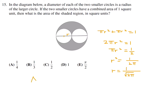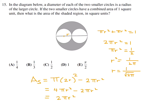The area of the shaded region equals the area of the big circle minus the two small circles. The big circle has radius 2r, so its area is π(2r)² = 4πr². Subtracting the two small circles: 4πr² − 2πr² = 2πr². But 2πr² = 1 according to the question. So the shaded area is 1. Number 15, the answer is D.